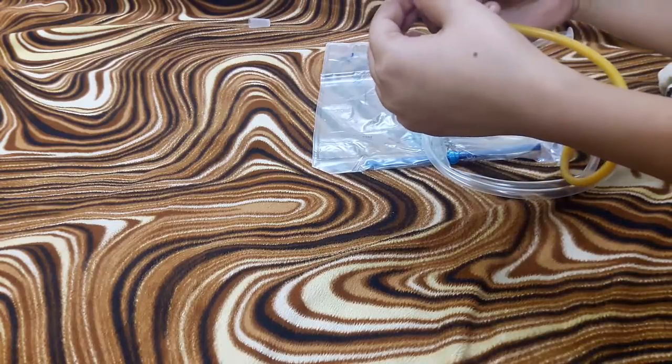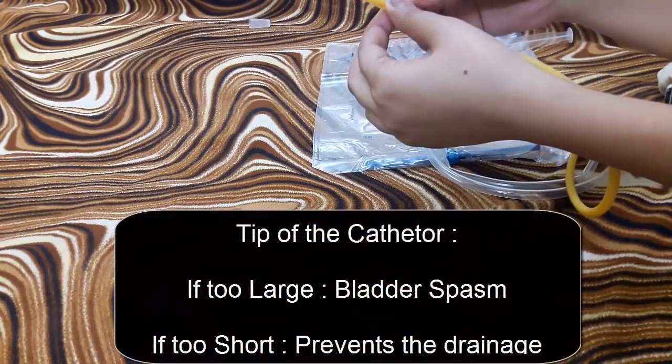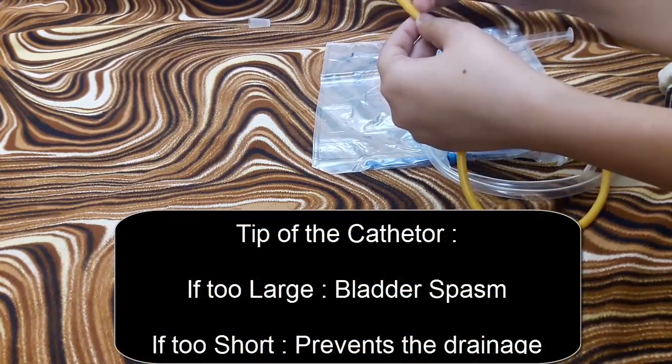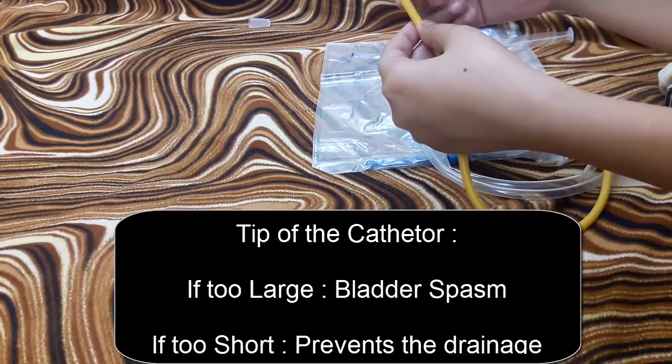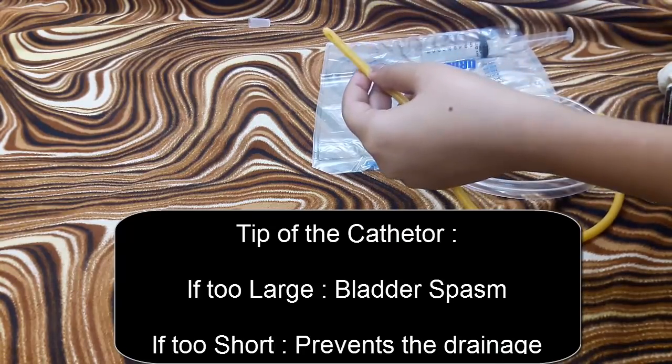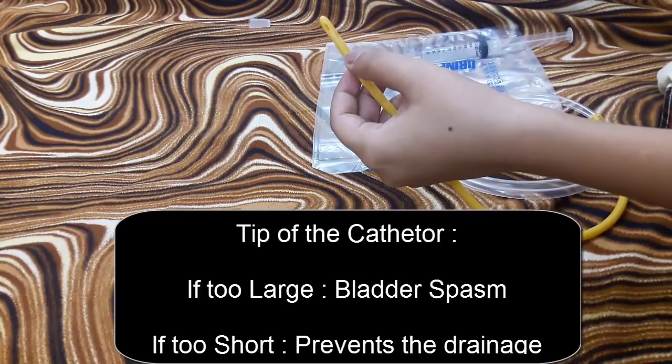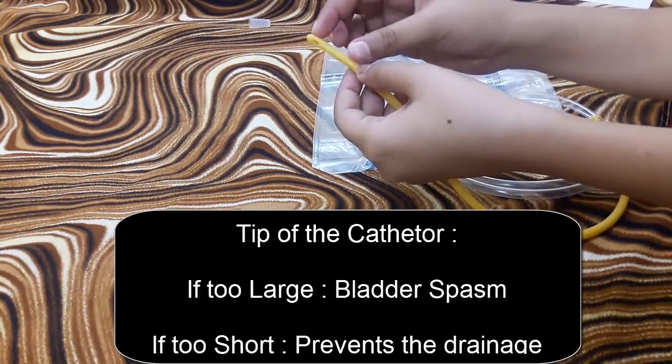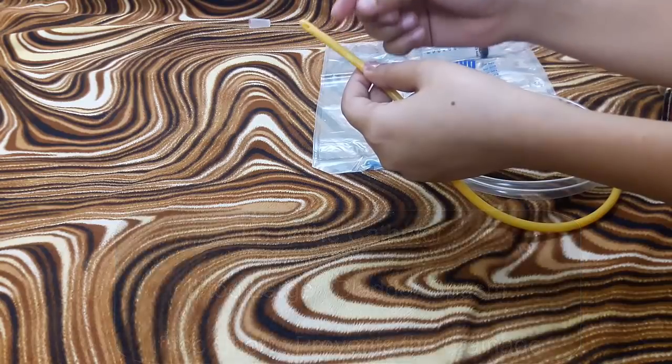The tip of the catheter is soft and blunt. If it is too large, it may cause bladder spasm by irritation. If it is too short, it prevents drainage because when you inflate the balloon, the holes get buried into the inflated balloon.